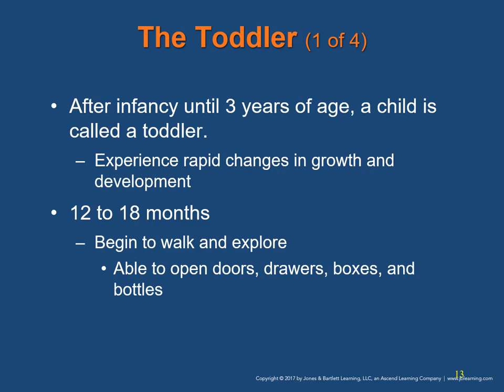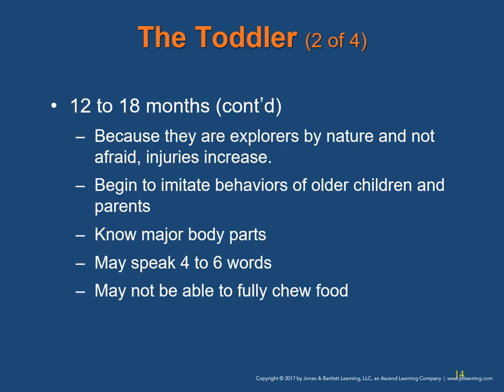The Toddler. After infancy until 3 years of age, a child is called a toddler. Toddlers experience rapid changes in growth and development. At 12 to 18 months, toddlers begin to walk and explore. They can open doors, drawers, boxes, and bottles. Because they are explorers by nature and not afraid, injuries in this age group increase. Toddlers begin imitating behaviors of older children and parents, know major body parts when pointed to, and may speak 4 to 6 words. Because of the lack of molars, they may not fully chew food, leading to increased risk of choking.